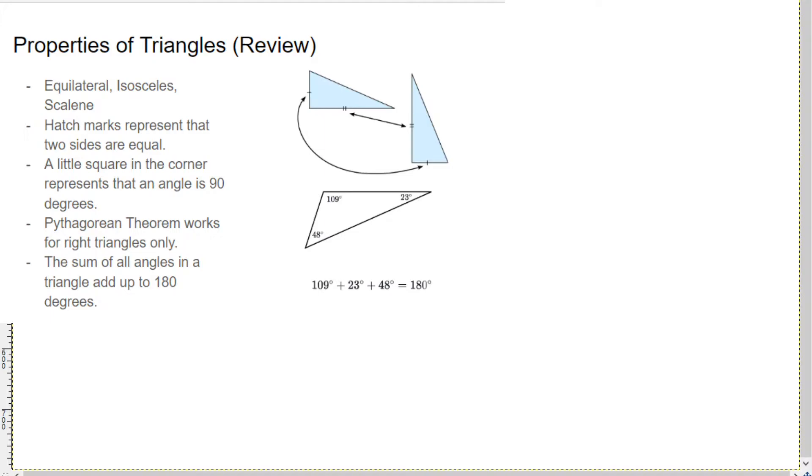The isosceles is the one that's often in a question, where they'll say, oh, this is an isosceles triangle. And that gives you a hint, okay, I know two sides are the same. Hatch marks represent that two sides are equal, so you'll notice there's like one hatch mark here and one hatch mark here. That means that that short side and that short side are equal. Same with the double hatch mark and the double hatch mark. It means those two sides are equal.